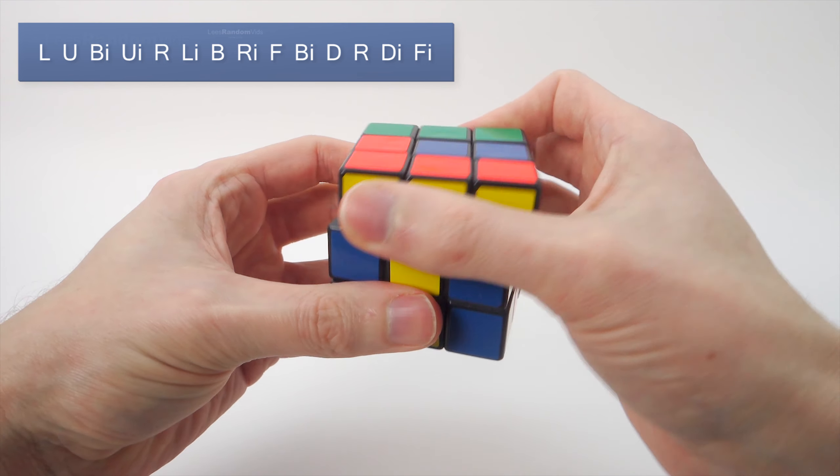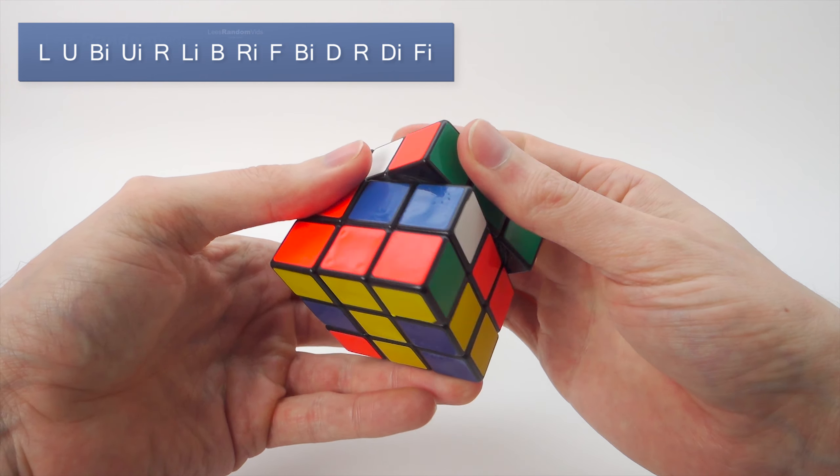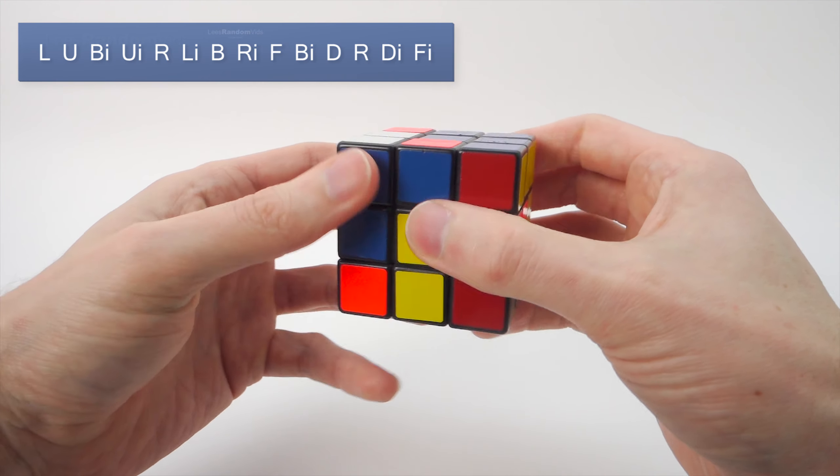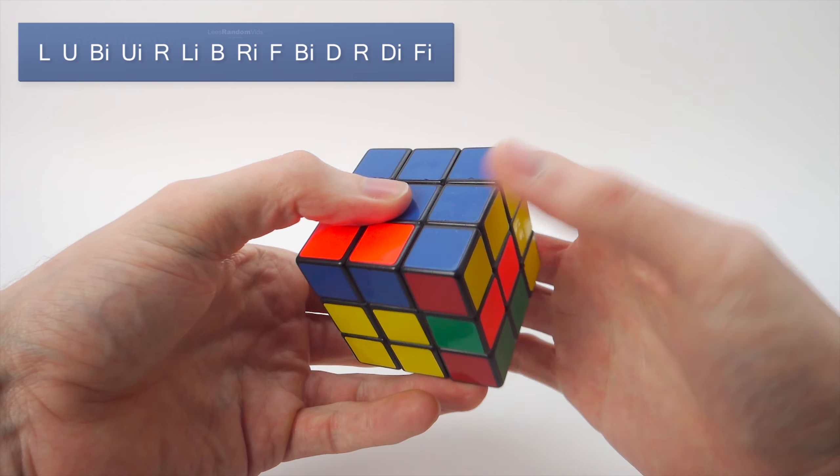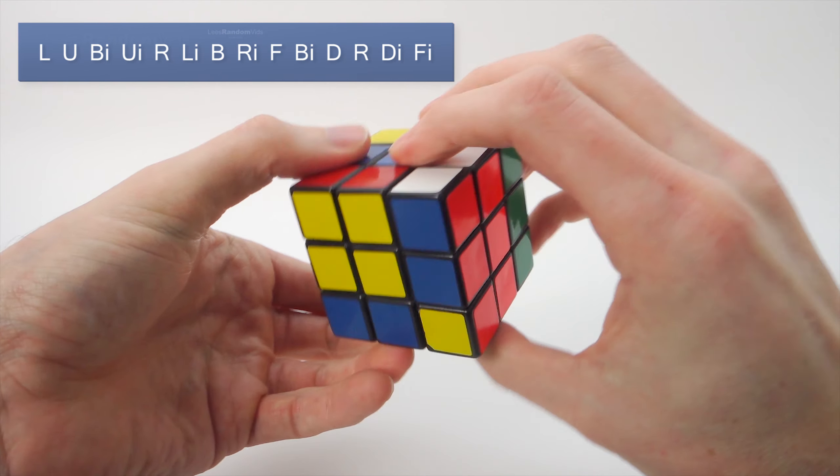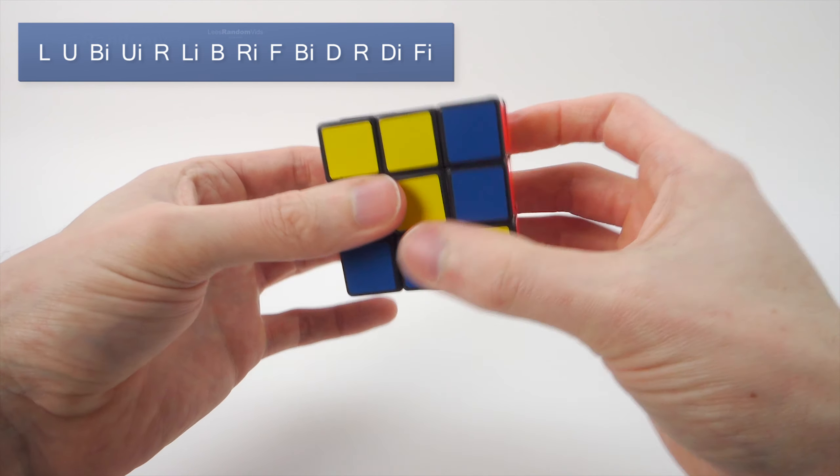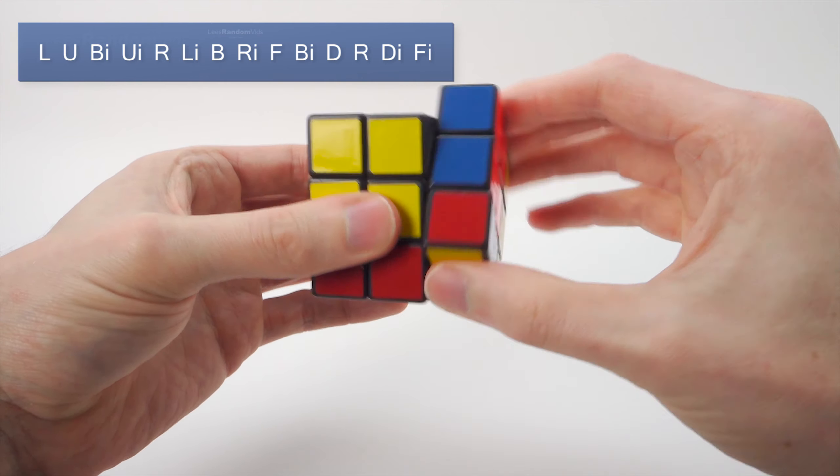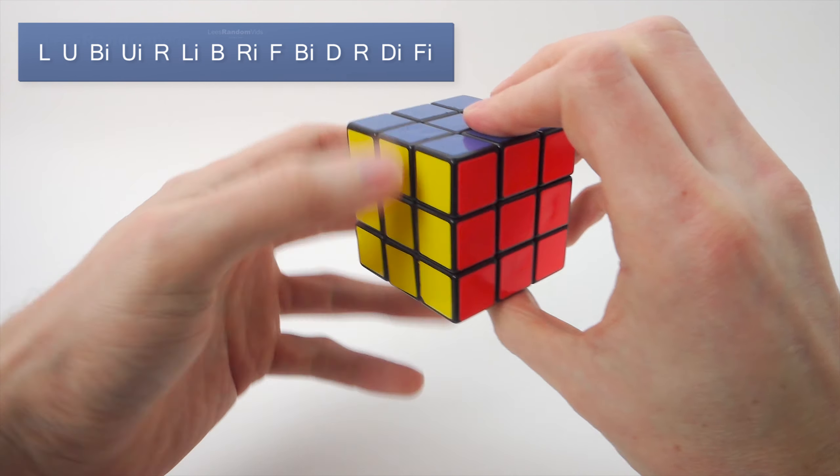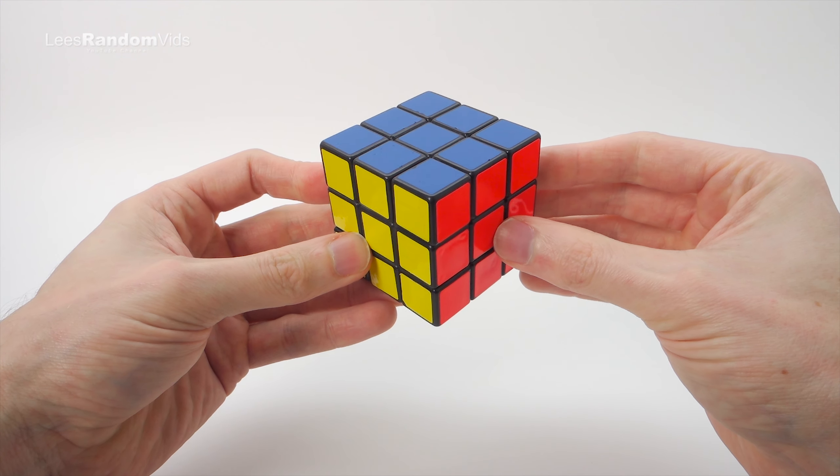L, U, B', U', R, L', B, R', F, B', D, R, D', F'. And there we are back to a completed Rubik's Cube.